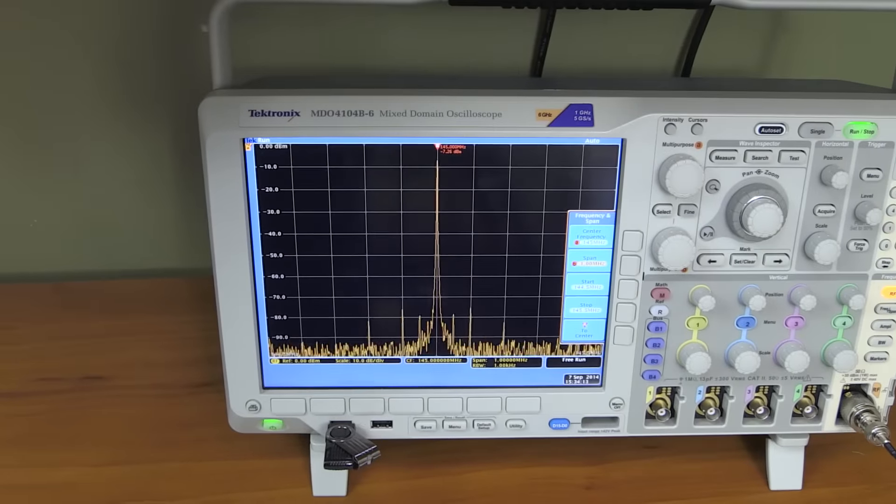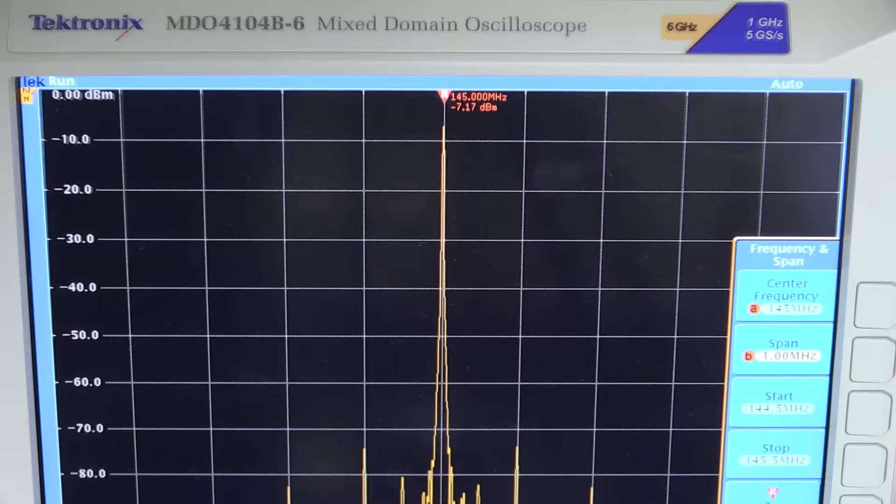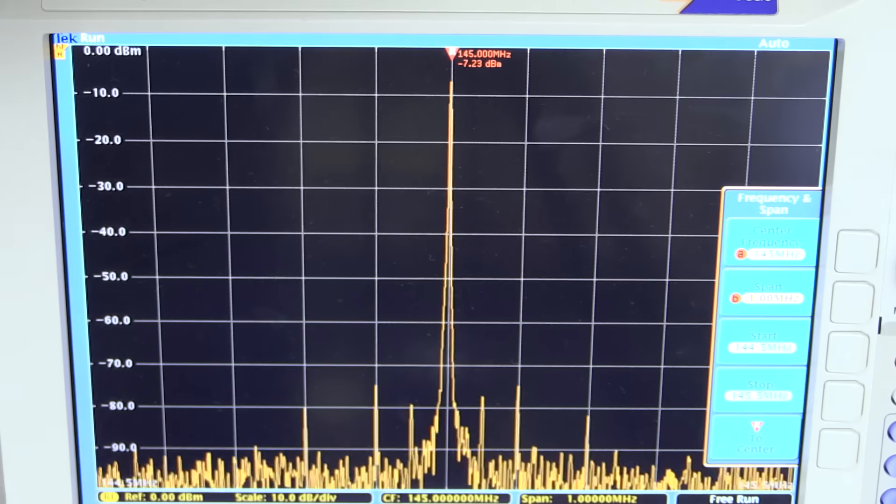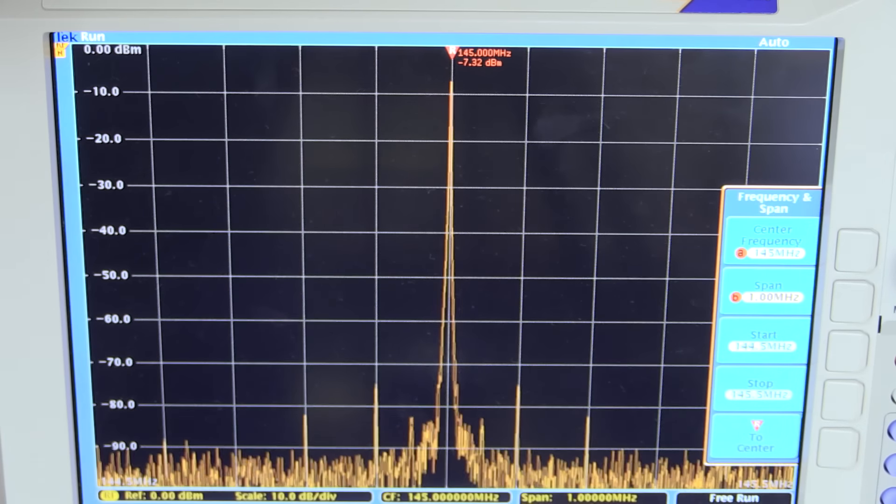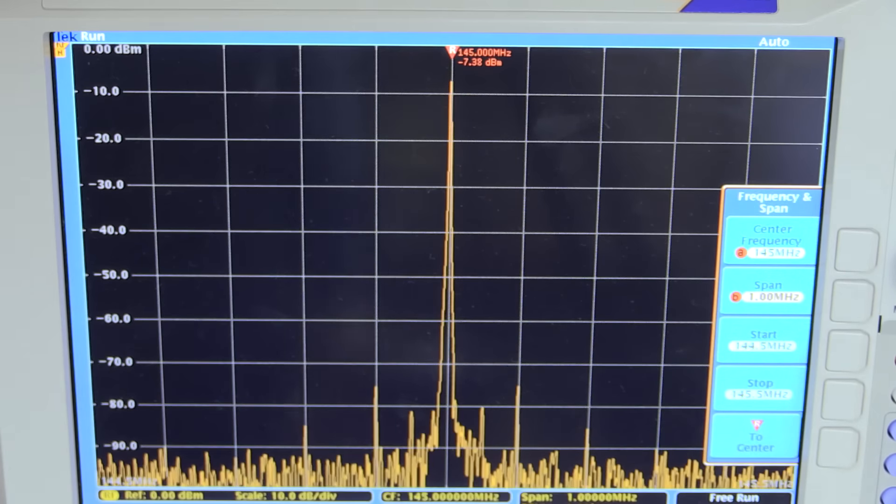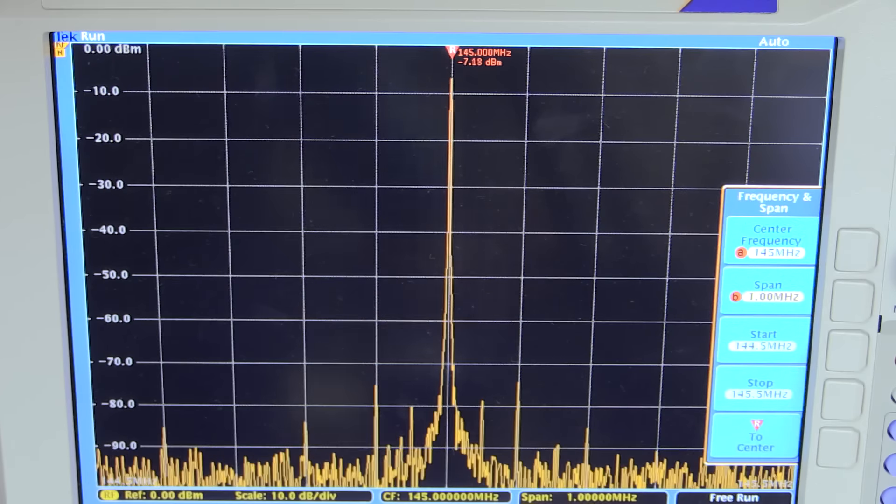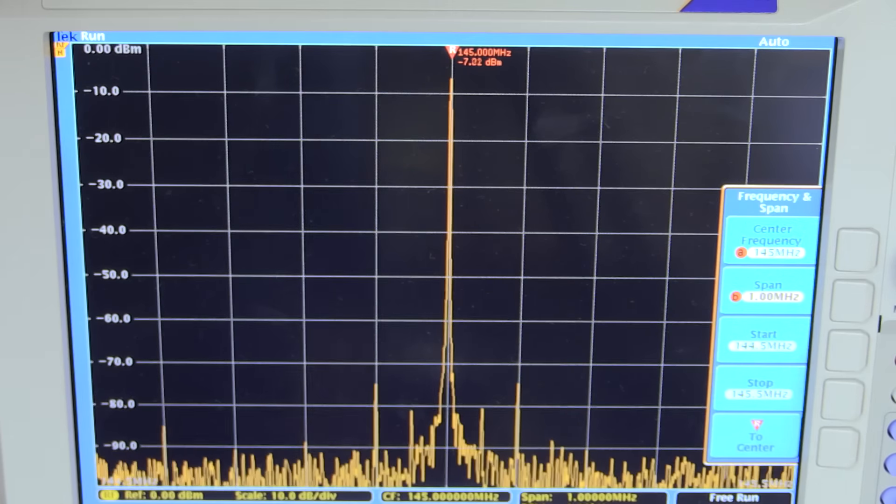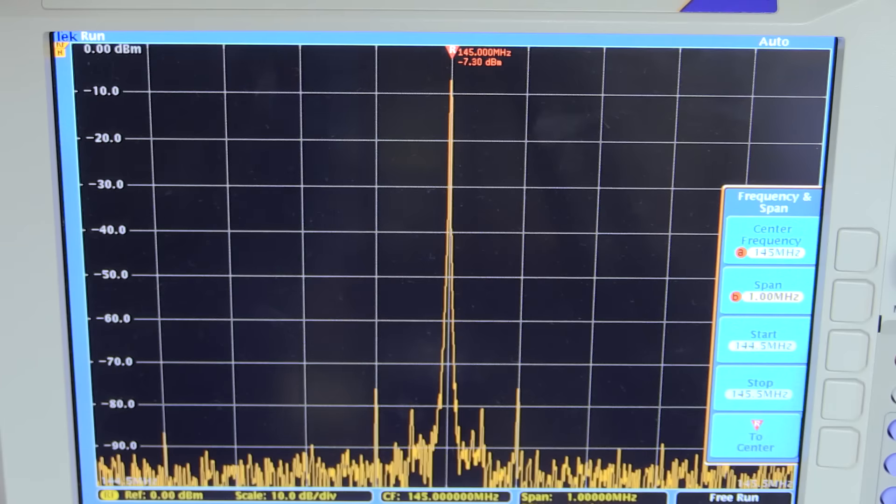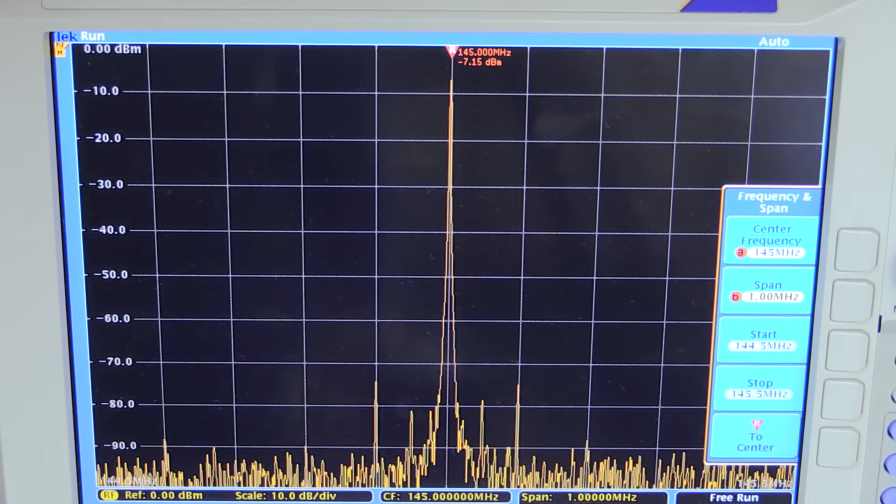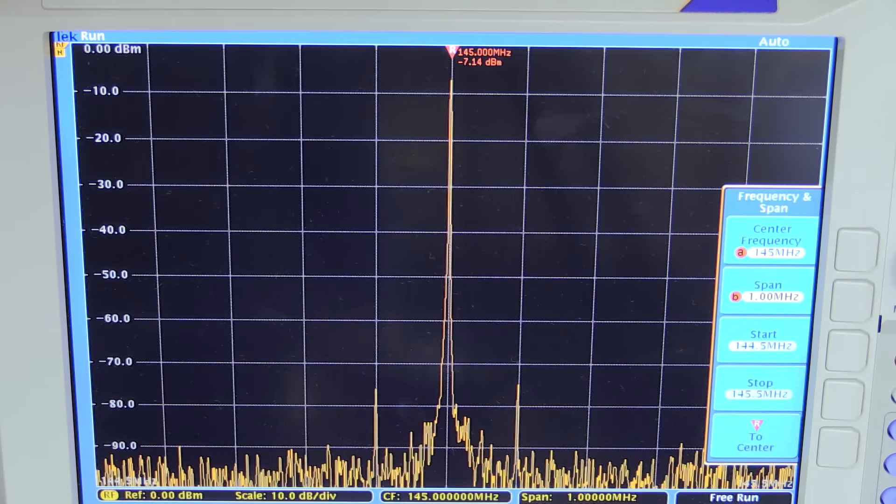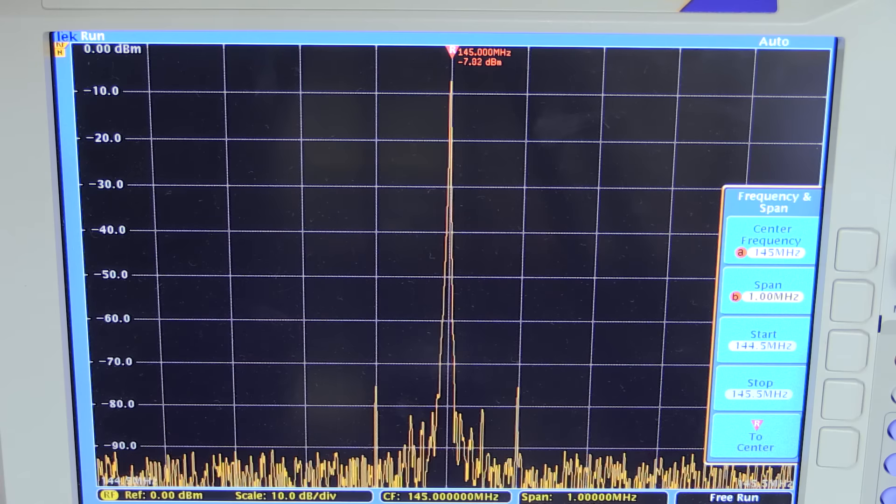Now, if I go back to the Tektronix scope here, you see that the power shown is negative 7 dB roundabout, and the power that I am feeding into the splitter is 0 dBm. So we have a loss here of about 7 dB between the ports, which is not really a very high isolation.